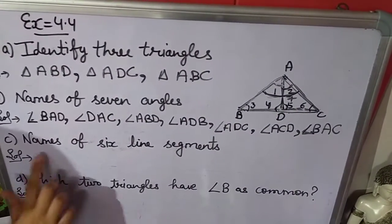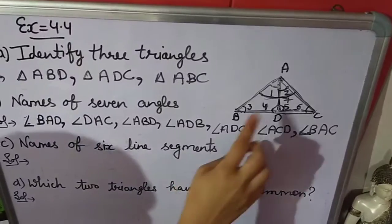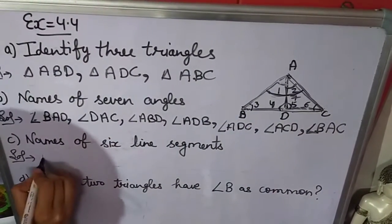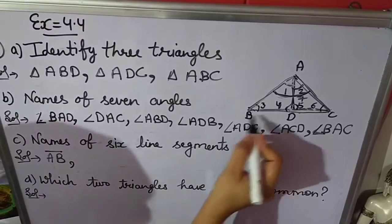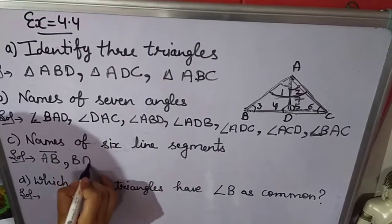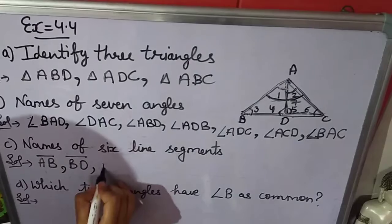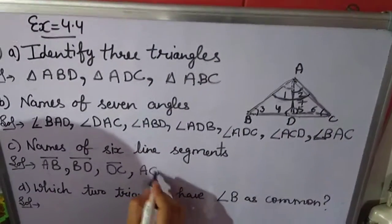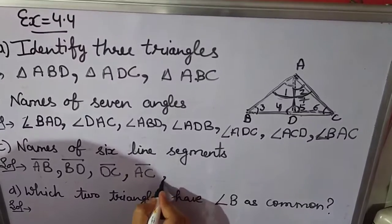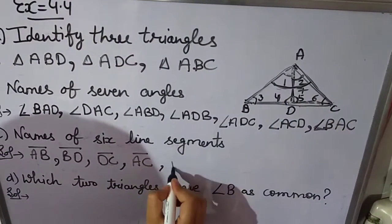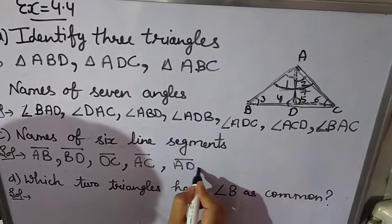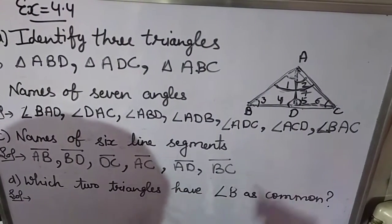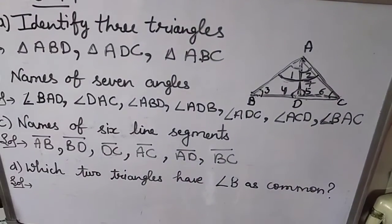Next question is names of 6 line segments. So we will write the names of 6 line segments here. First is AB. Second is BD. Third is DC. Fourth is AC. Fifth is AD. And the sixth is the complete line BC. These are the 6 line segments.